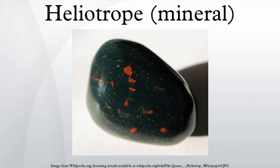The mineral heliotrope, also known as bloodstone, is a form of chalcedony. The classic bloodstone is green chalcedony with red inclusions of iron oxide or red jasper. Sometimes the inclusions are yellow, in which case the mineral is given the name plasma.